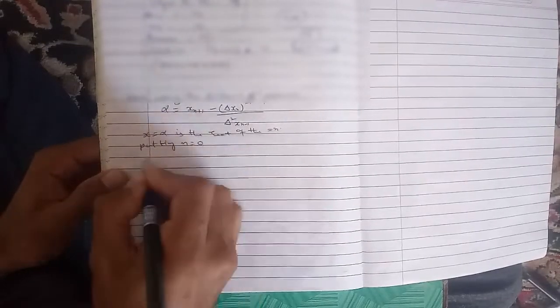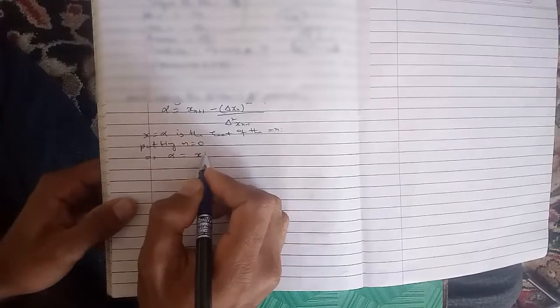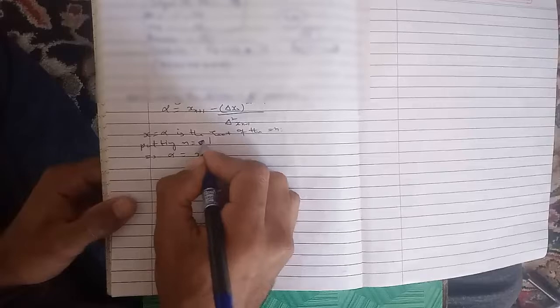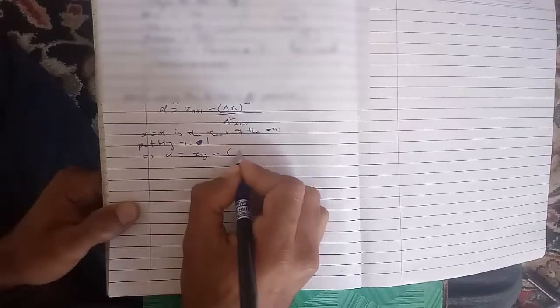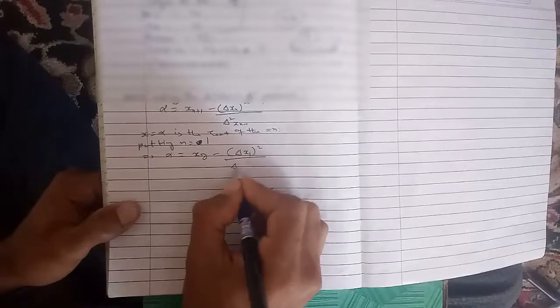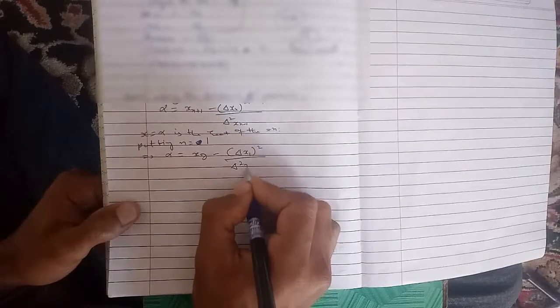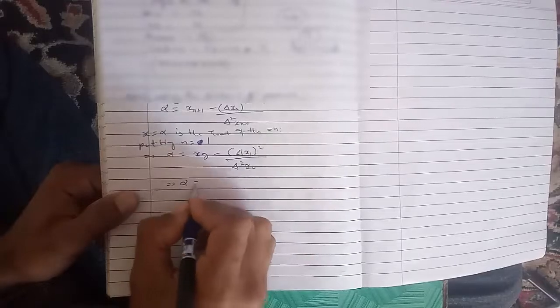Putting n equals 1, we get α equals x₂ - (Δx₁)² divided by Δ²x₀.